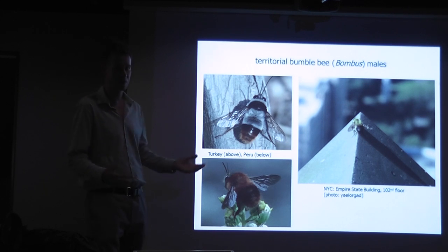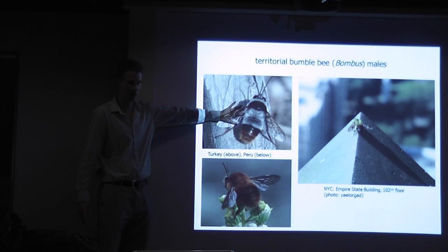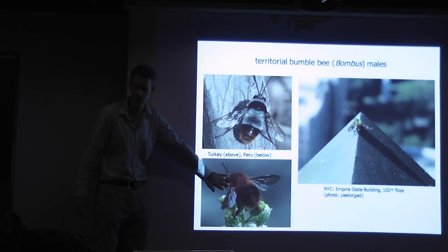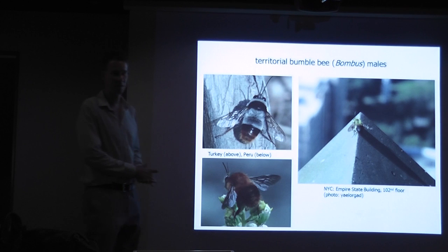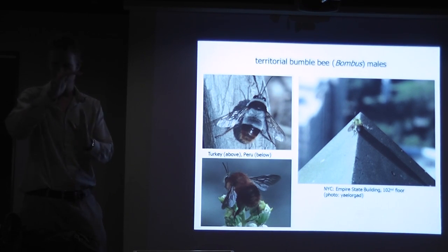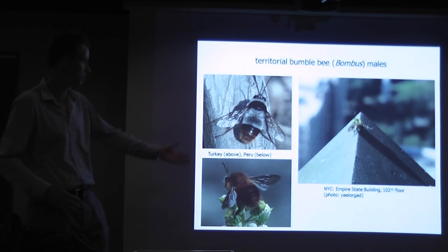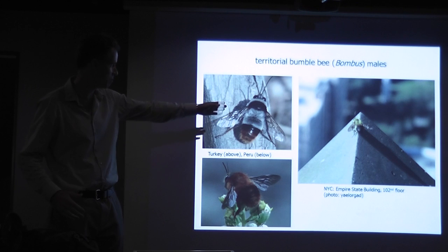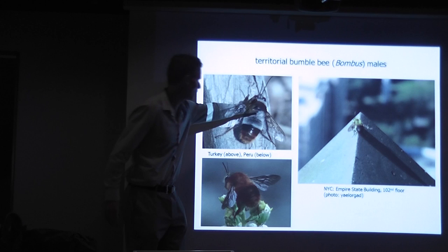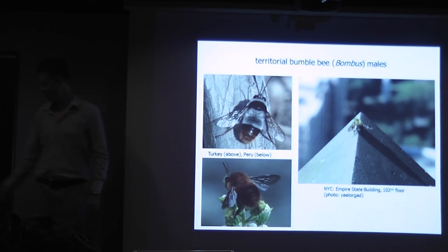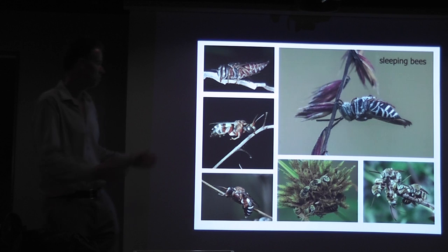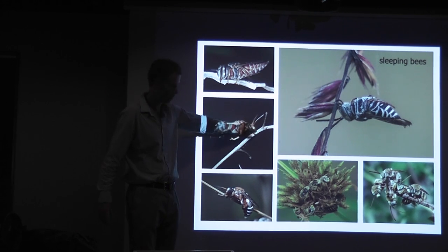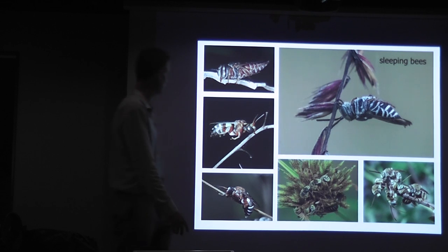We're starting to document behavior with citizen science. Here's a photo from Turkey of a male bee perching on a territory, a Peruvian species perched, and then a North American species perched on top of the Empire State Building — 102nd floor, like the King Kong of bees — waiting for females to come up. Males have big eyes and when they see a female they fly up and contact her. When you're doing citizen science databases you constantly see amazing photos showing behavior: sleeping bees grappling a branch with their mandibles, upside-down sleeping bees doing it in groups, and so on.